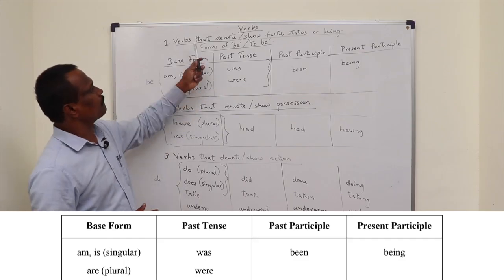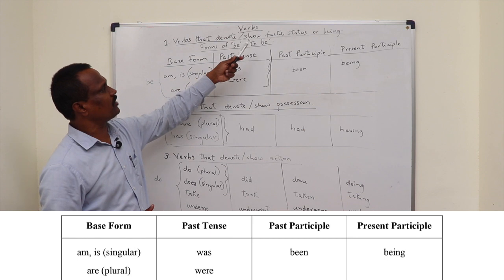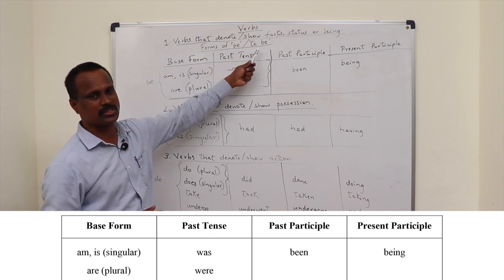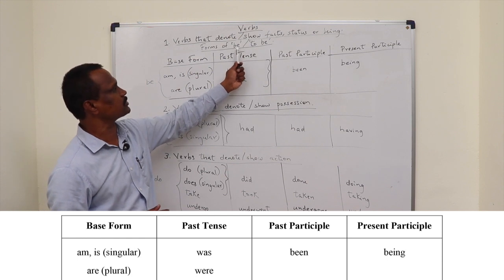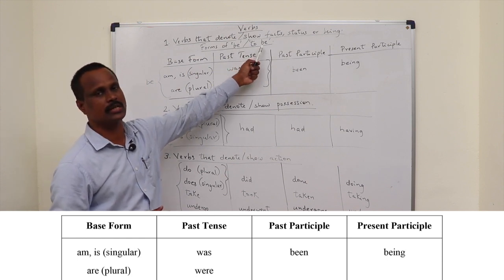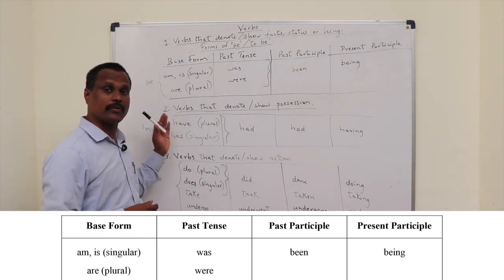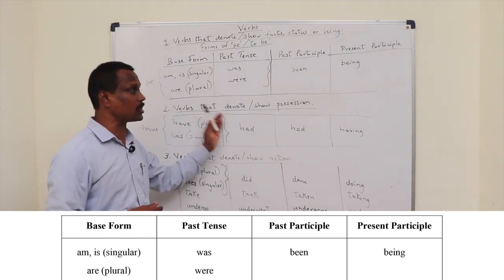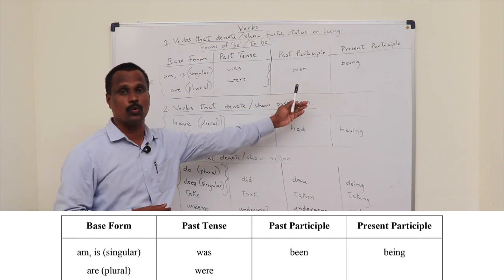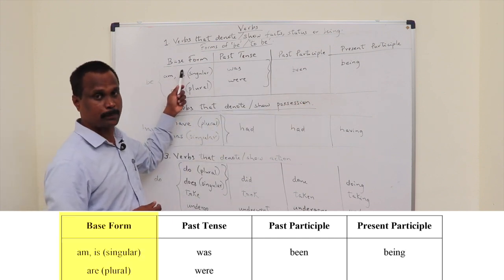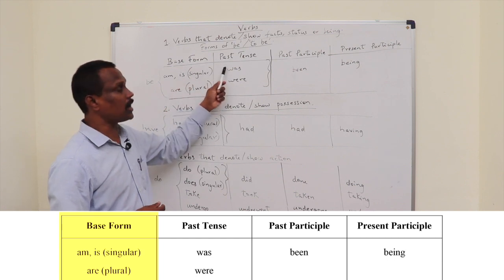So here, for the verbs that show facts or status, usually we say be or to be. In some grammar books it is mentioned as be and in some other grammar books it's to be. Other than the three categories, the verbs are again classified or divided into four columns. Like base form, which is the present tense, past tense,